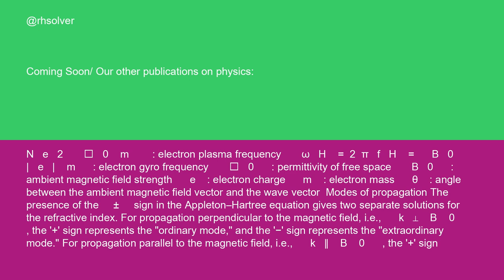ωh = 2πfh = eB₀/m: electron gyro frequency. ε₀: permittivity of free space. B₀: ambient magnetic field strength. e: electron charge. m: electron mass. θ: angle between the ambient magnetic field vector and the wave vector.